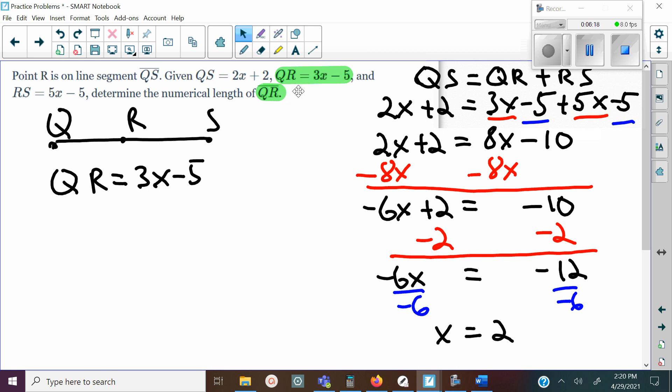Then once you plug it in, 3 times 2 is 6, 6 minus 5 is 1. The length of QR is 1.